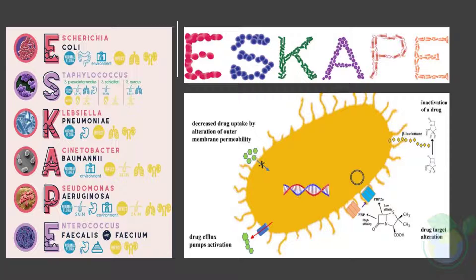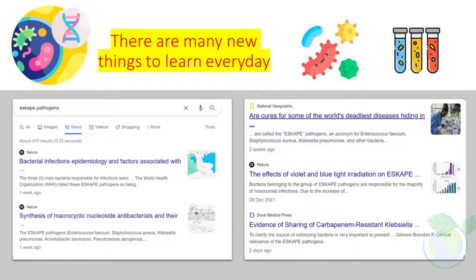There is much new knowledge from ongoing research in biofilms and bacterial resistance, with some example articles shown in the screen grab. Biofilms are defined as aggregated microbial communities attached to surfaces and embedded in a self-produced matrix composed of extracellular polysaccharides, DNA, and proteins.